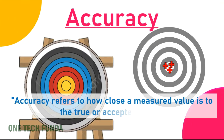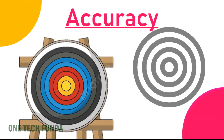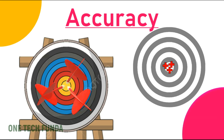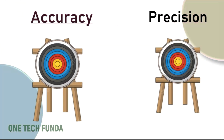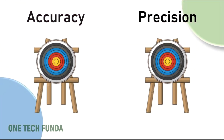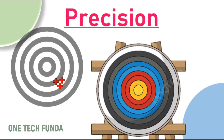Accuracy refers to how close a measured value is to the true or accepted value. Imagine shooting arrows at a target — if they consistently hit near the bullseye, regardless of where the bullseye actually is, that means you have high accuracy.